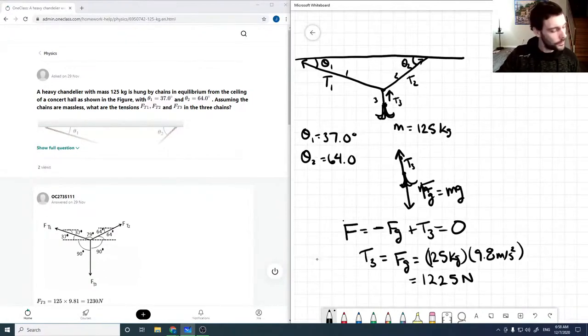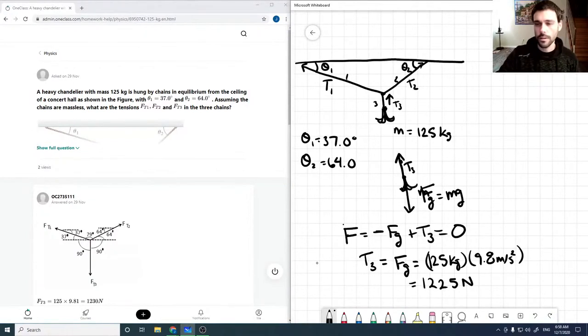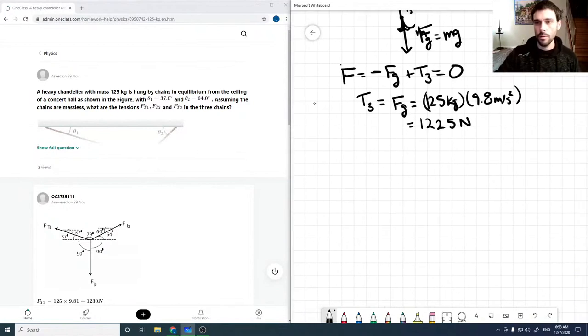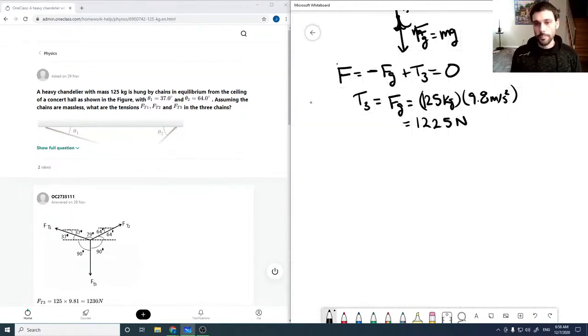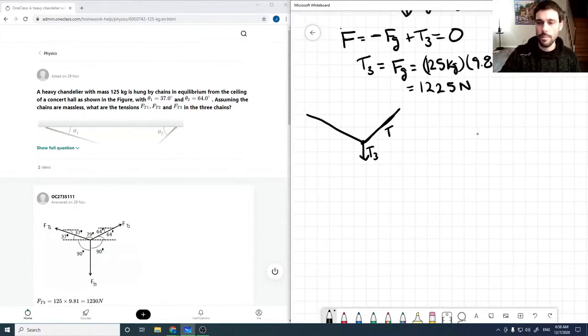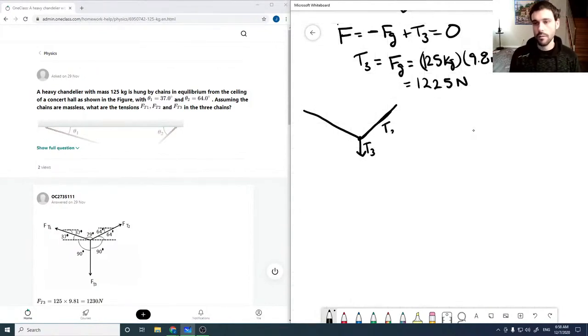And now, expanding for T1 and T2. So I'm just going to kind of redraw here. So at this point, we have T3, T1, what did I call this, T2. And T1 over here. And that angle is 37 degrees. And that angle is 64 degrees. Okay, so here now,